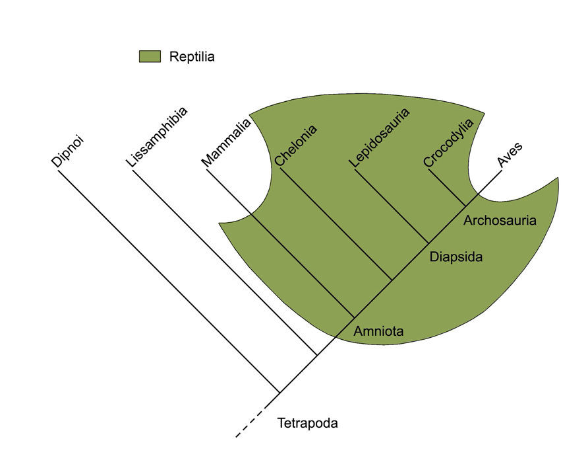Reptilia contains the last common ancestor of reptiles and all descendants of that ancestor, including all extant reptiles as well as the extinct synapsids, except for mammals and birds. Other commonly recognized paraphyletic groups include fish, monkeys, and lizards.